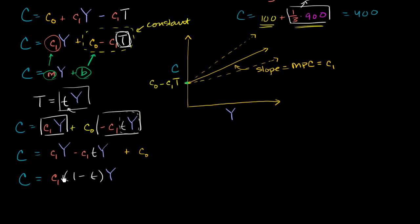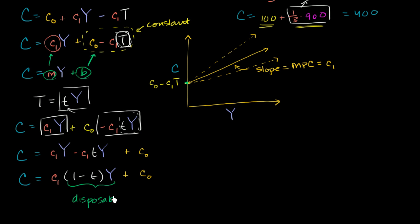You can multiply this out to verify: c1 times 1 times y gives the first term, and c1 times negative t times y gives the second term. This actually makes a lot of sense. The term (1 minus t) times aggregate income — if the tax rate is 30%, then 1 minus 30% is 70%, and 70% times aggregate income is essentially what people get in their pockets. This whole term is disposable income.